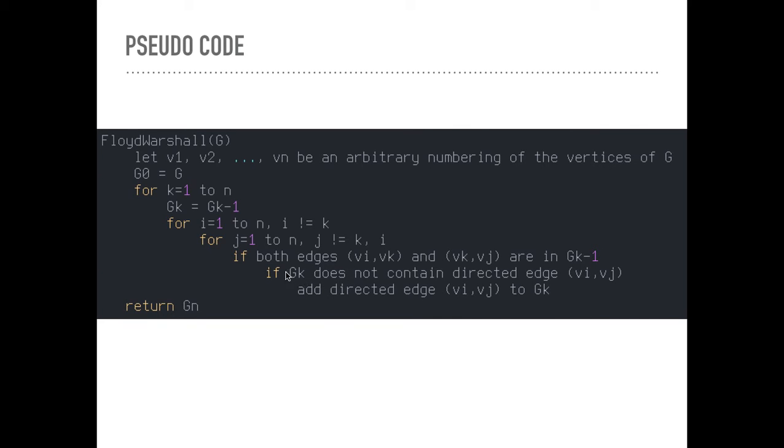If gk does not contain the directed edge (vi, vj), or you might call it (a,c), then we'll add that directed edge. You can see how each graph gk is going to be a little bit better, a little bit better approximation than gk-1 was.